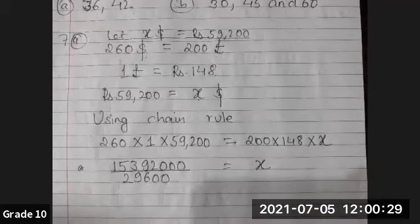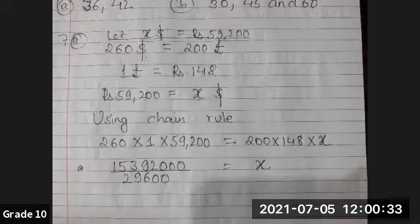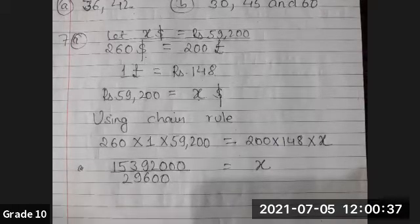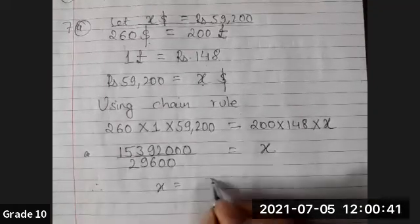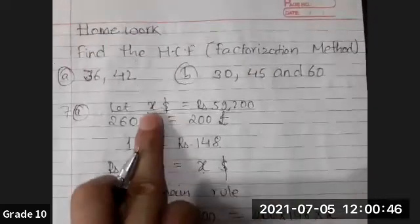So now let me get the final answer: 15,392,000 divided by 29,600 equals 52. Therefore x equals 52 dollars. Hence that missing dollar is 52, that means 52 dollars equals 59,200 rupees.